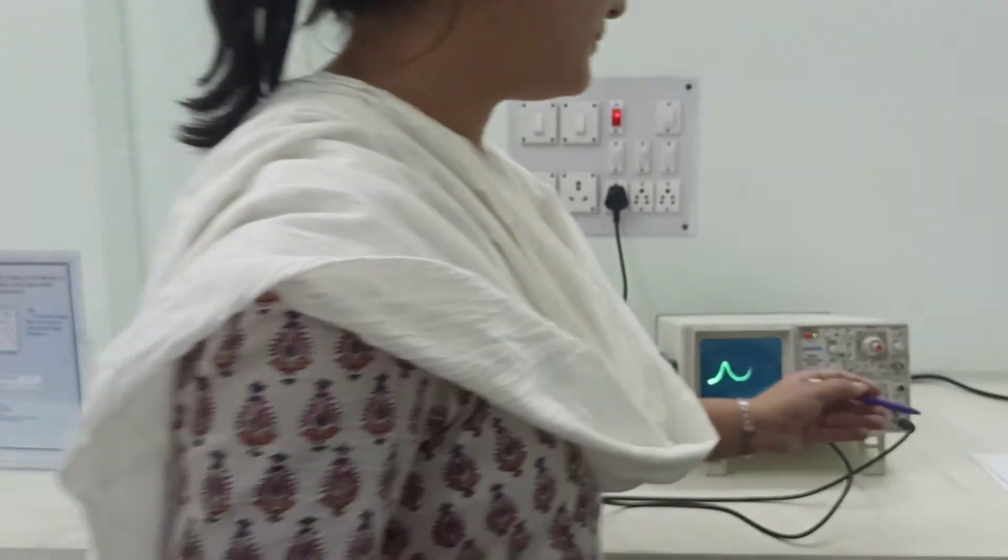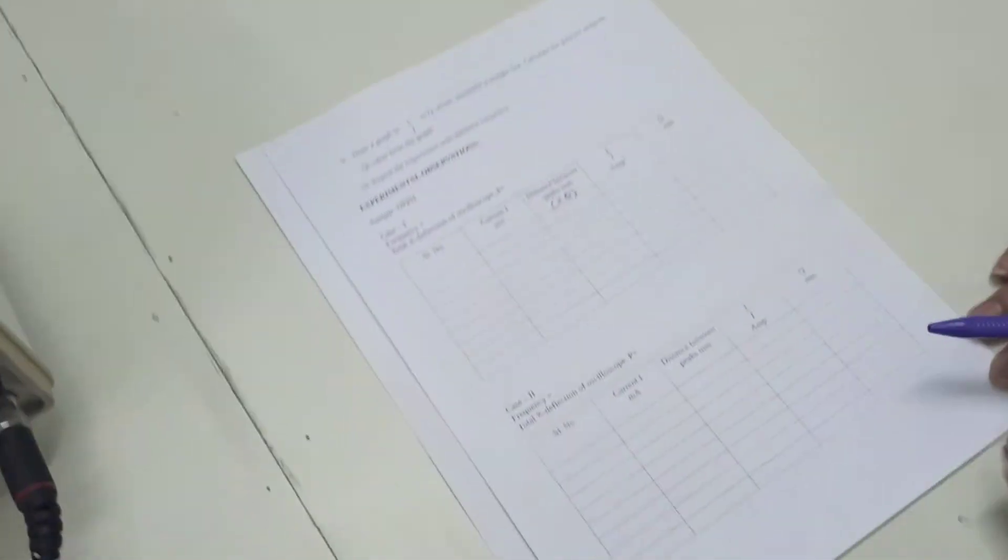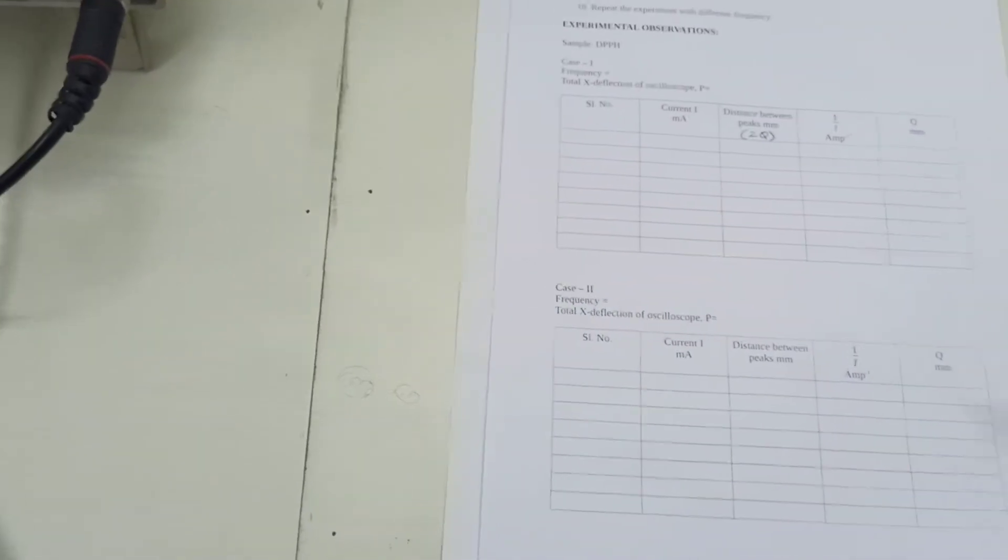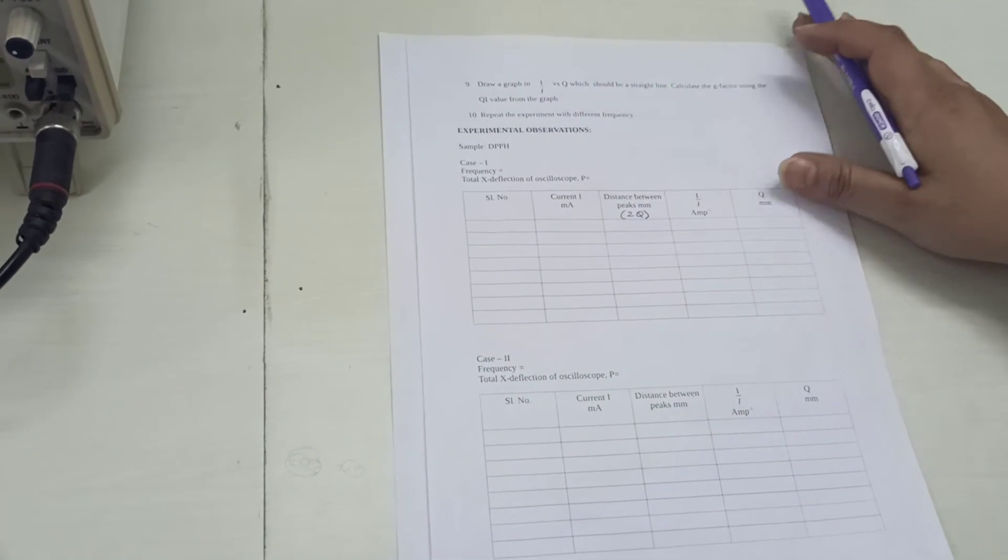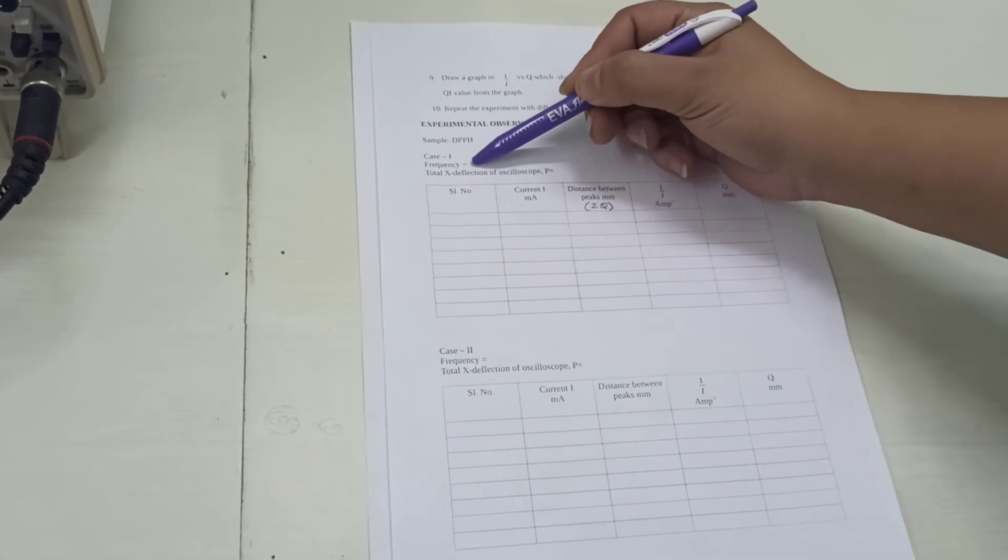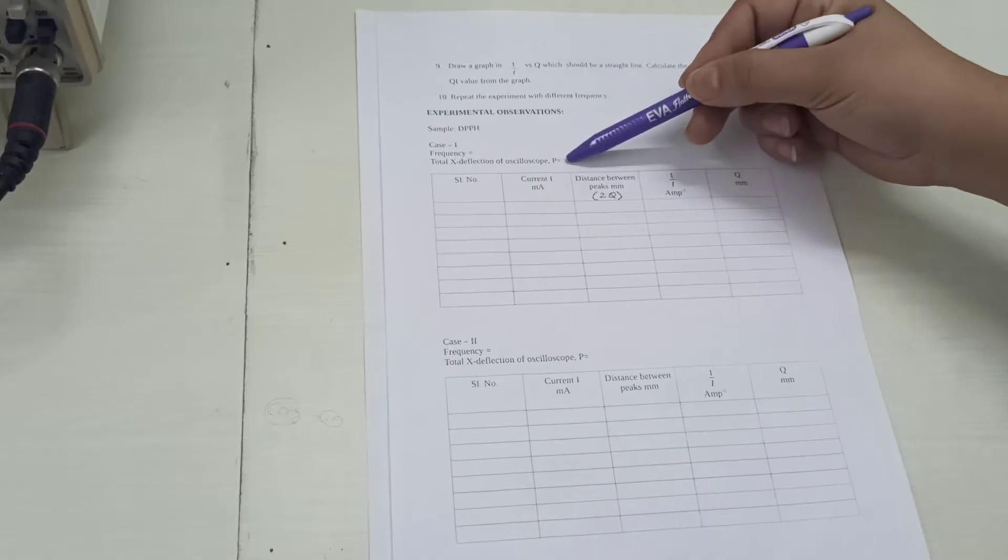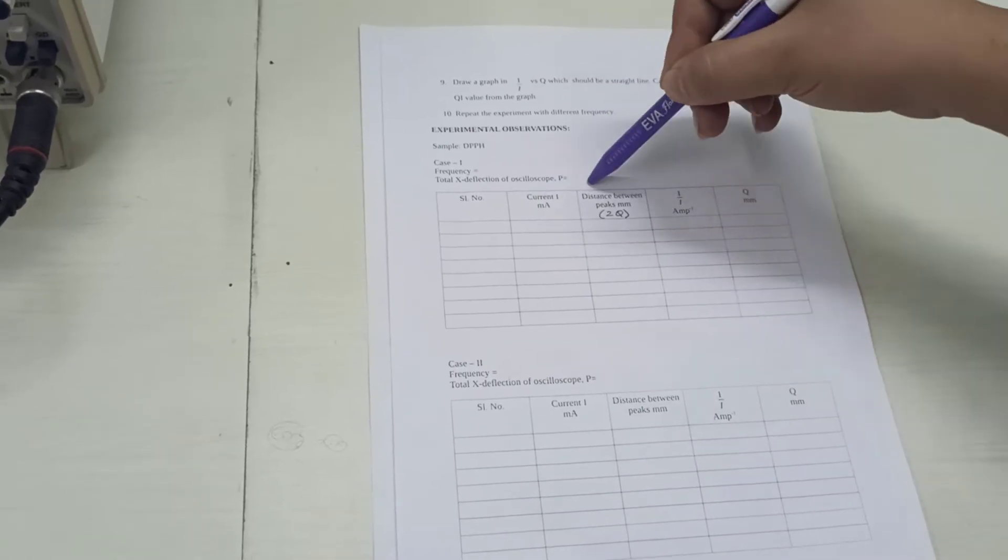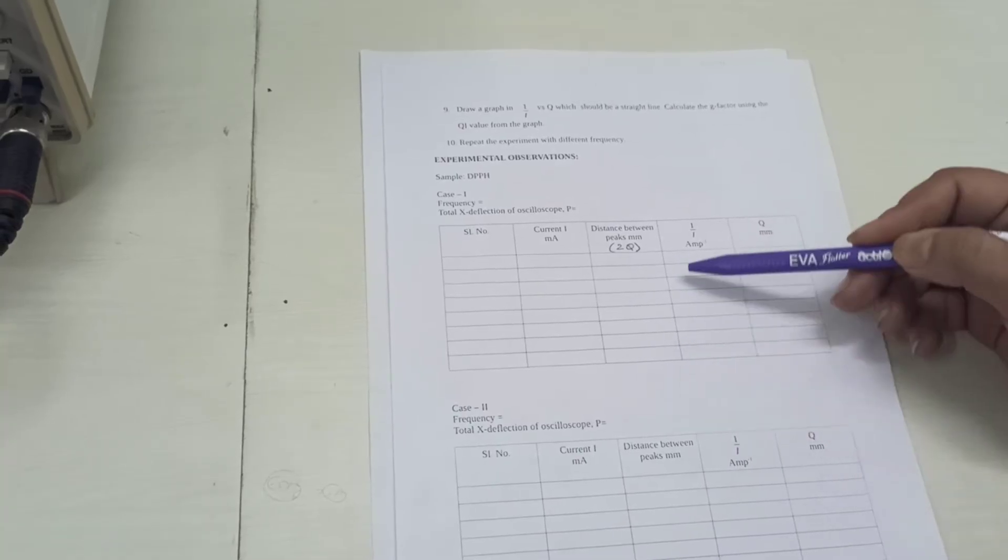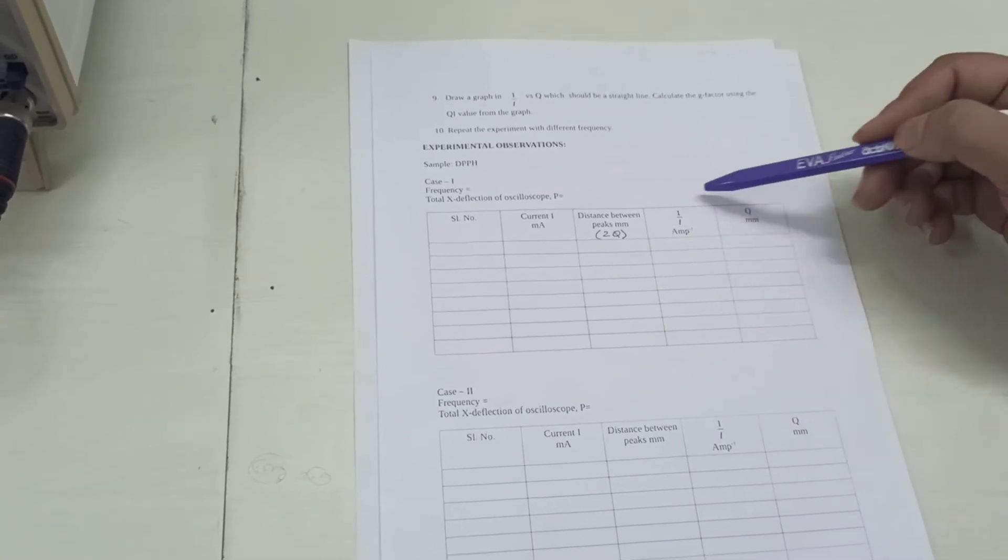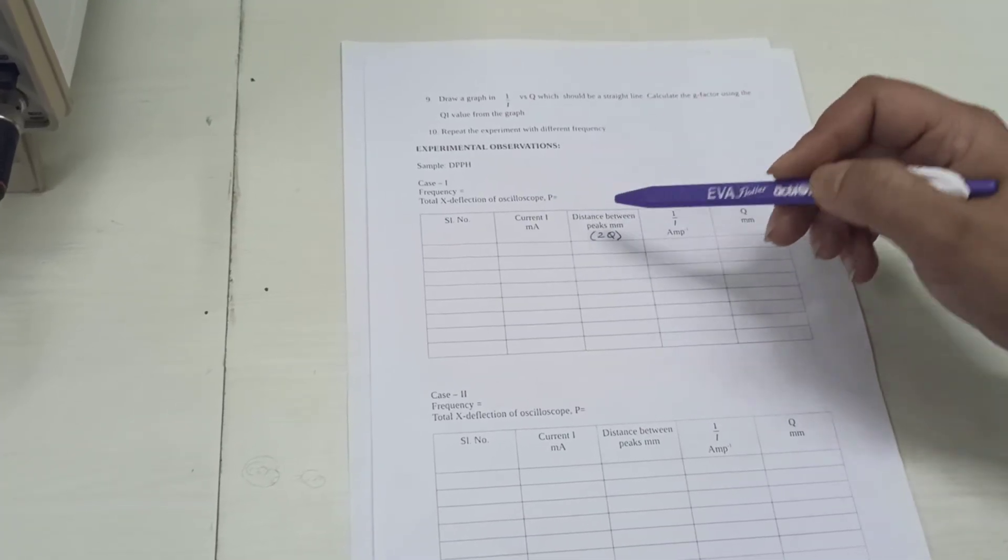So here, in your experimental observation, what we see is you have your serial number. This is for a particular frequency, you note down whatever frequency you have, and then you have your x deflection. I will tell you what that x deflection is. Then you have your different currents, and then you have your 2q, and then you will find using the values which are given here.